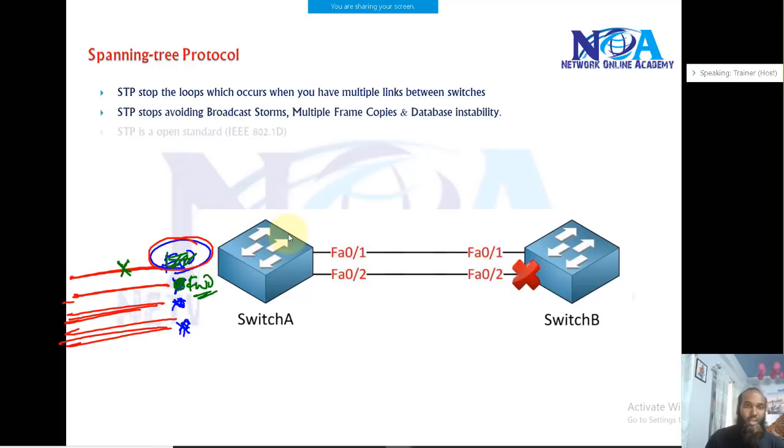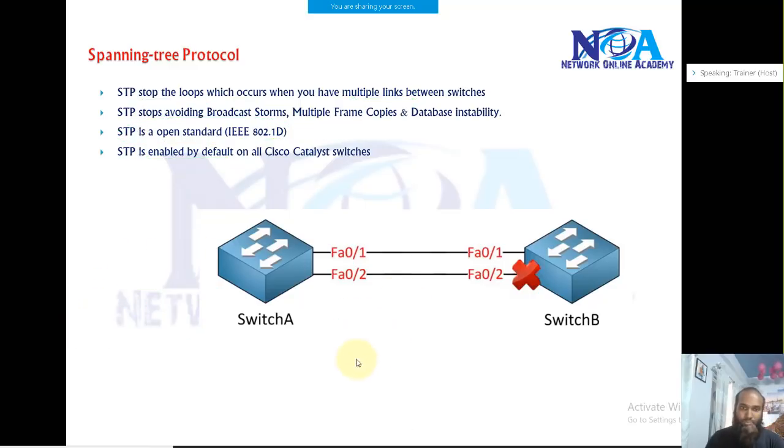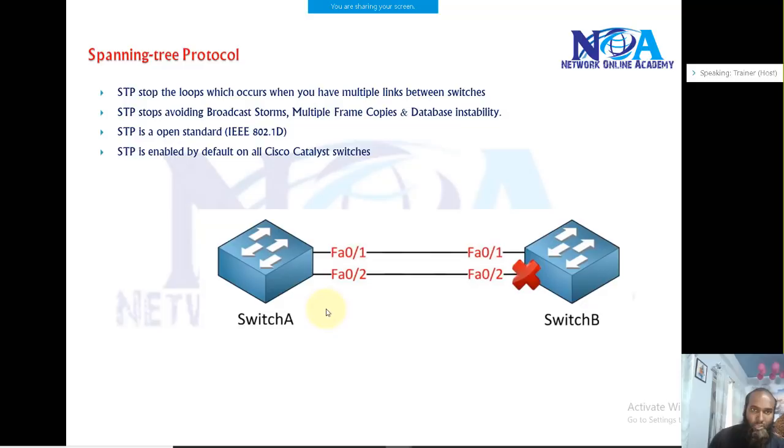And that's what STP will do. So STP's job is to ensure that any one link is forwarding. It's a standard protocol which is enabled in all the switches, so you don't need to enable it—it's a default feature which is enabled in every switch. And it's going to stop the loops when you have multiple links between the switches. How is it going to do that? It's going to ensure that any one link is going to forward, the rest of the links automatically go into the blocking state. So which means it's going to put the other alternate links into the blocking state.